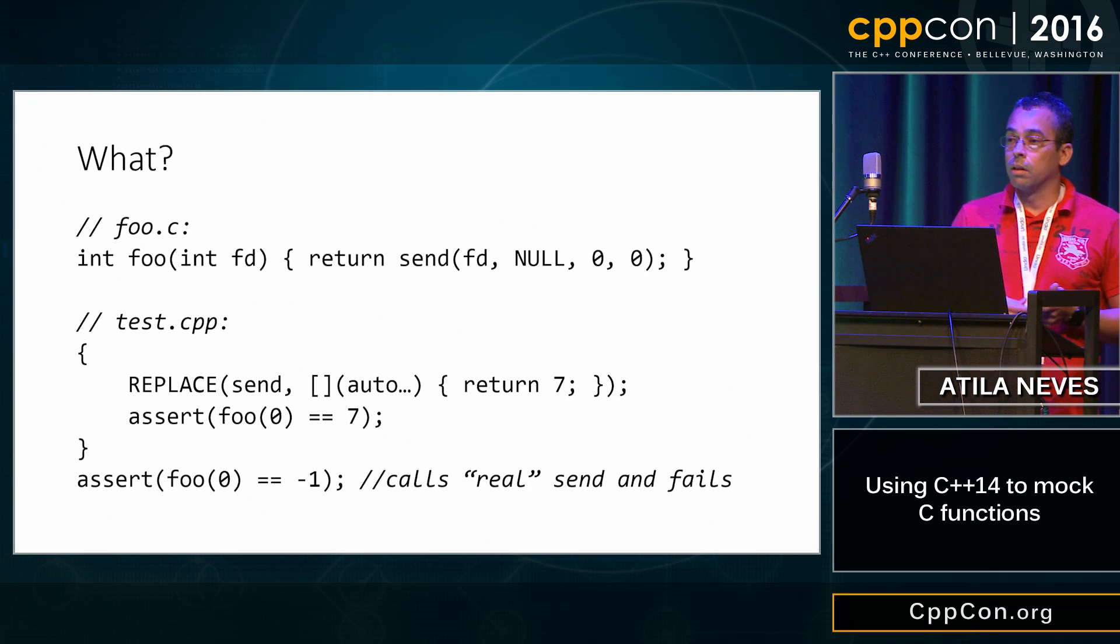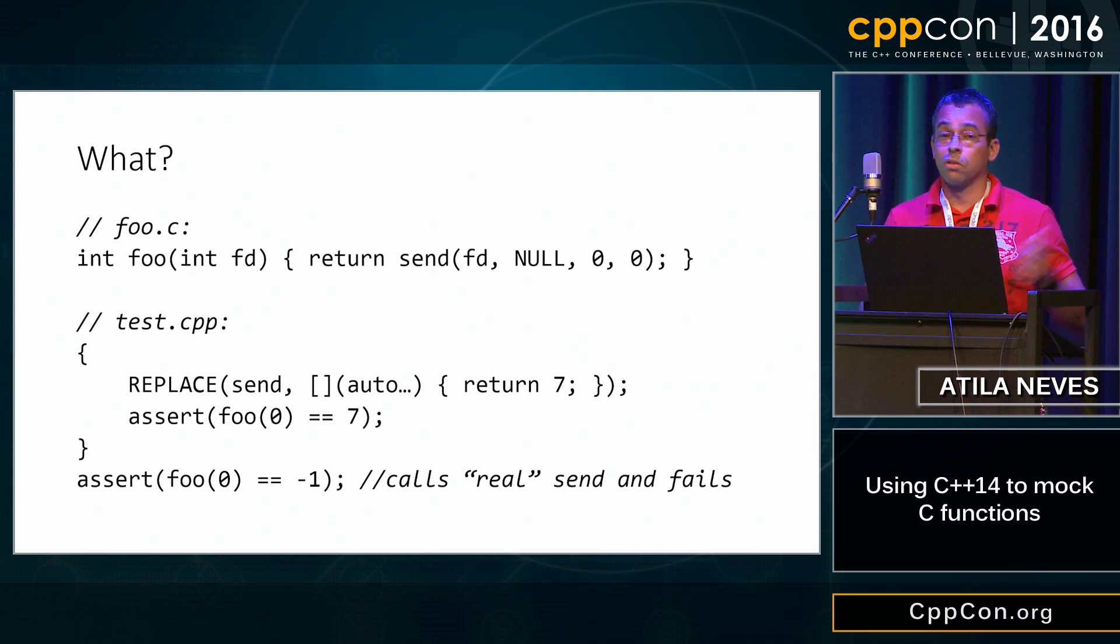Now the block ends, I call foo with zero again, now it returns minus one. Why? Because it's calling send from sys/socket and zero isn't a valid file descriptor so you have to go look at errno.